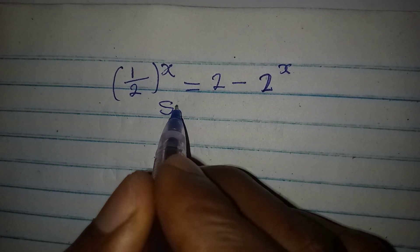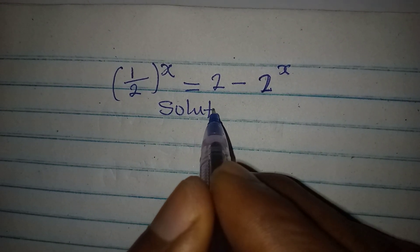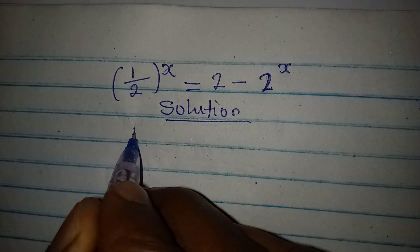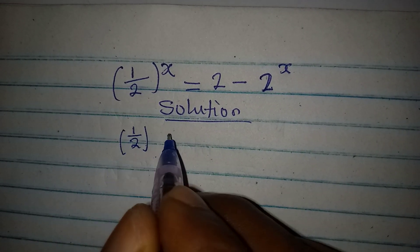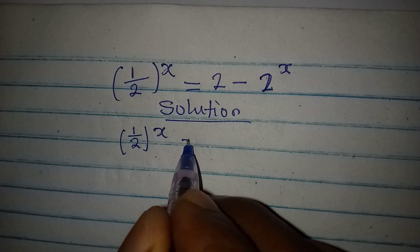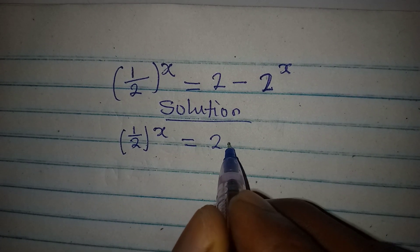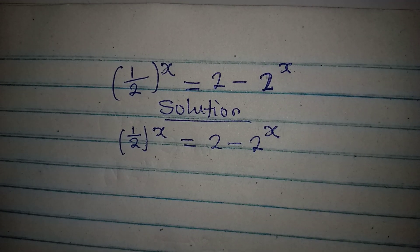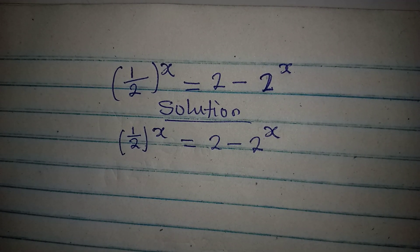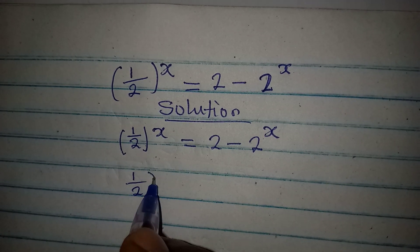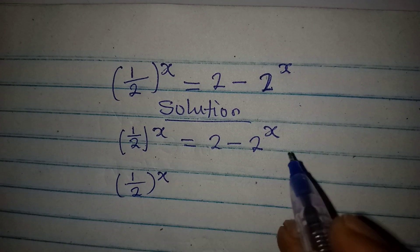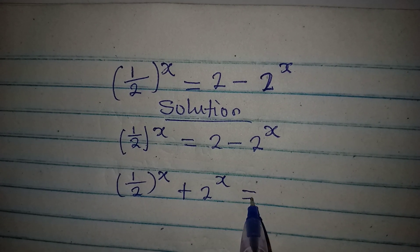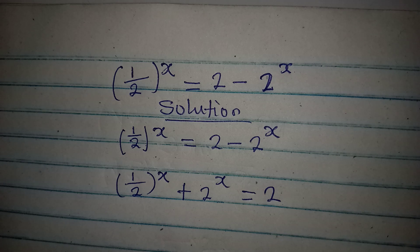Let's solve this problem. We have 1 over 2 to the power of x equal to 2 minus 2 to the power of x. I want to rearrange this: 1 over 2 to the power of x becomes plus 2 to the power of x equal to 2, bringing the terms with x together.